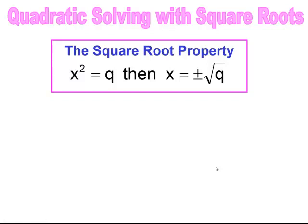Solving quadratics with square roots. If we have x squared equal to some value q, to solve for x, we need to do the inverse operation of a square, which is the square root. So if we were to solve for x, we would end up with two solutions: the positive square root of q or the negative square root of q.